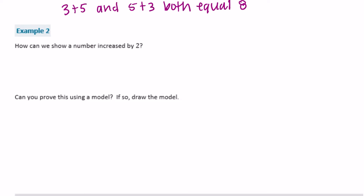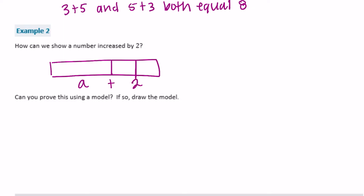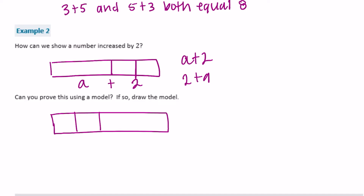Example 2: how can we show a number increased by 2? They don't tell us the number, but we know it's increased by 2. I'm going to say that number is a, so we have a plus 2, or you could flip it to 2 plus a. Can you prove this using a model? Yes — I'll draw the model showing 2 plus a, and confirm using a bar diagram.